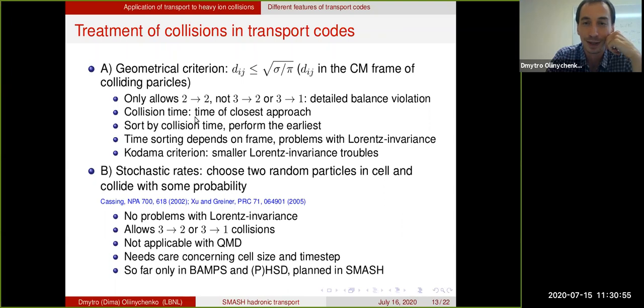It means that Lorentz invariance is not exact with geometrical criterion. How people live with this is we just test that in different frames we get essentially the same results, and then it's fine. And it's not always fine. There is some slightly improved Kodama criterion where there are smaller Lorentz invariance troubles.